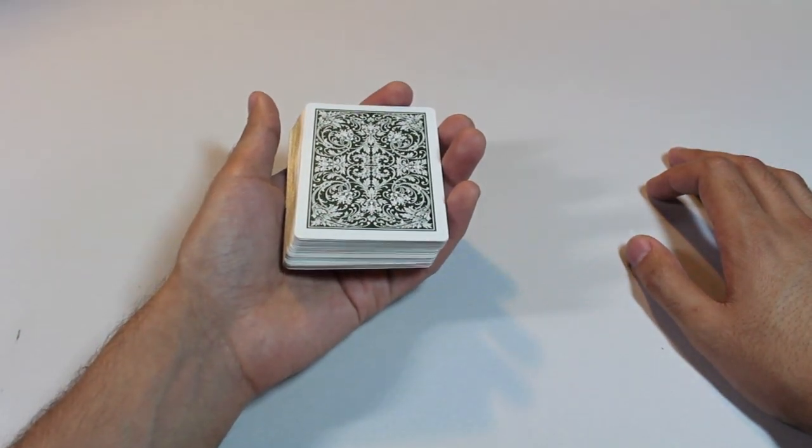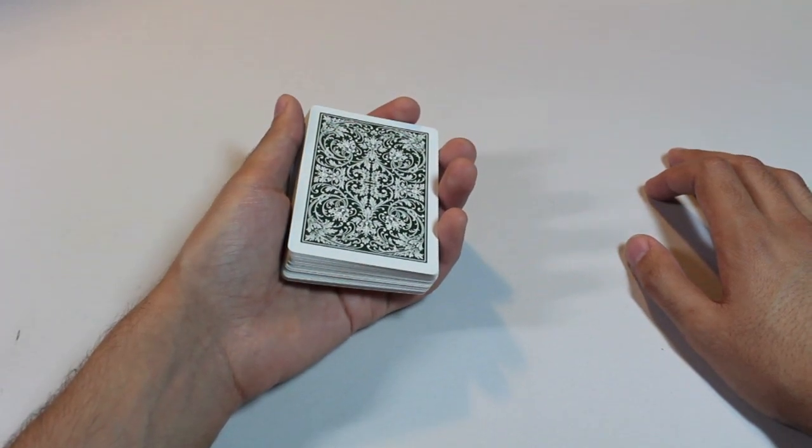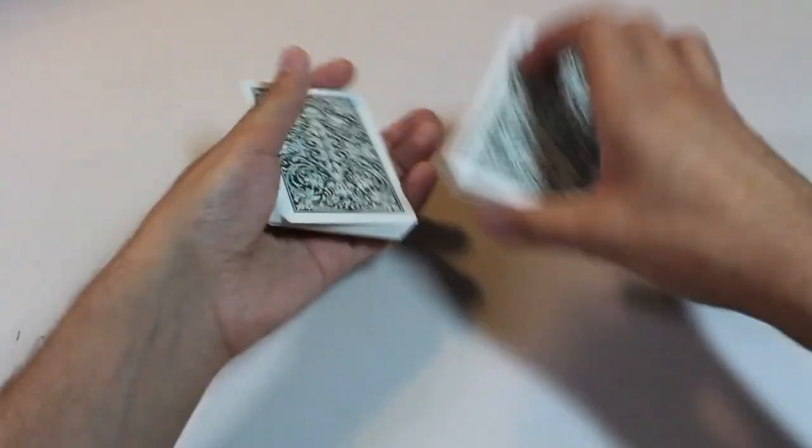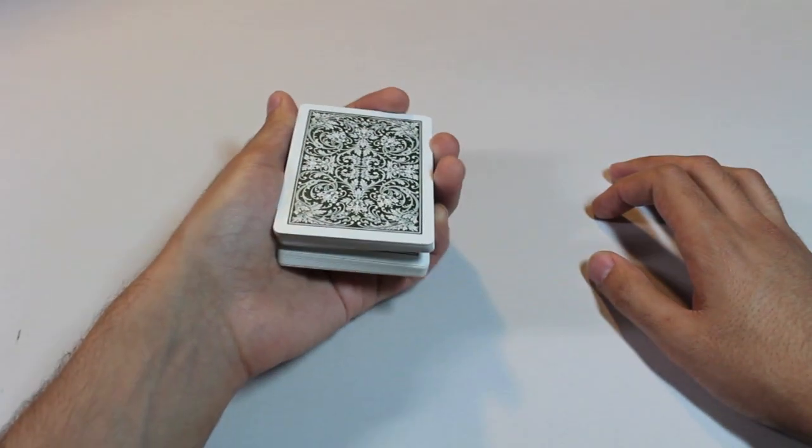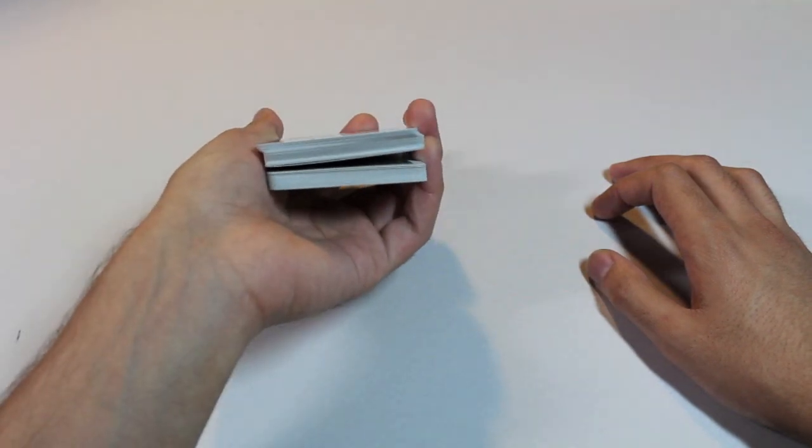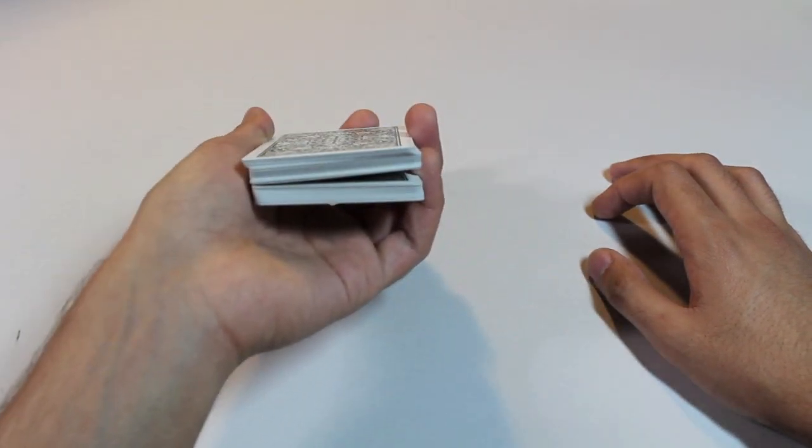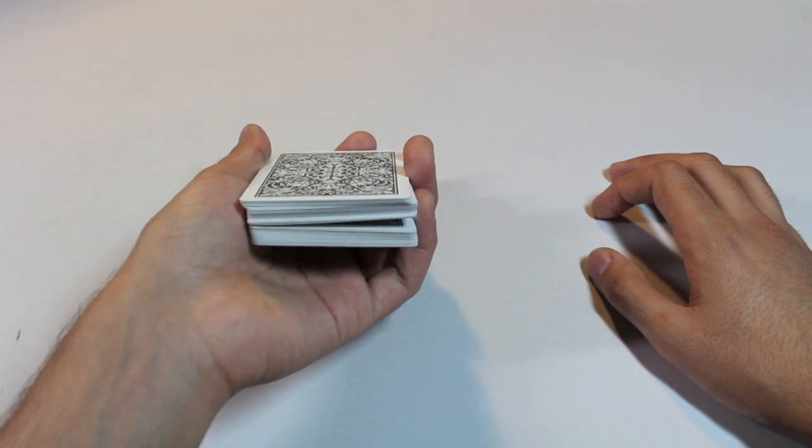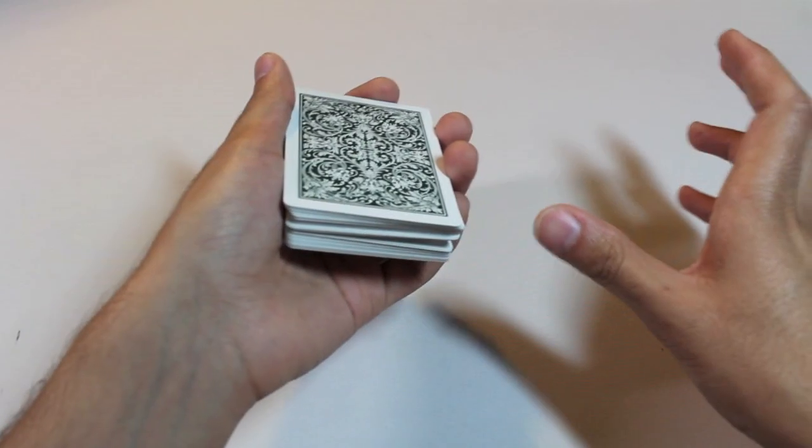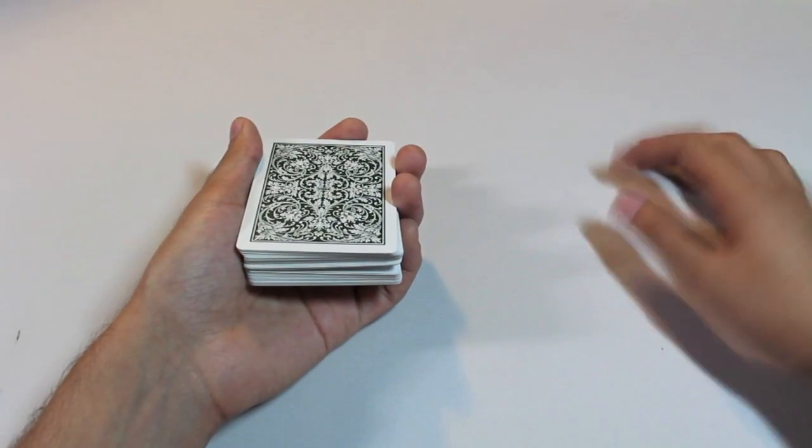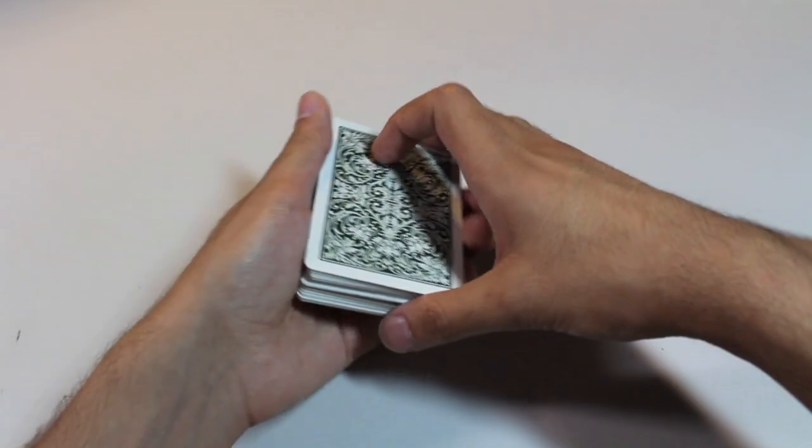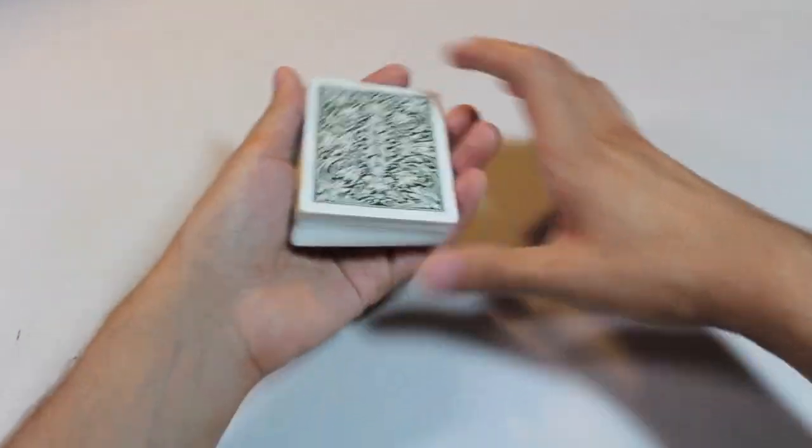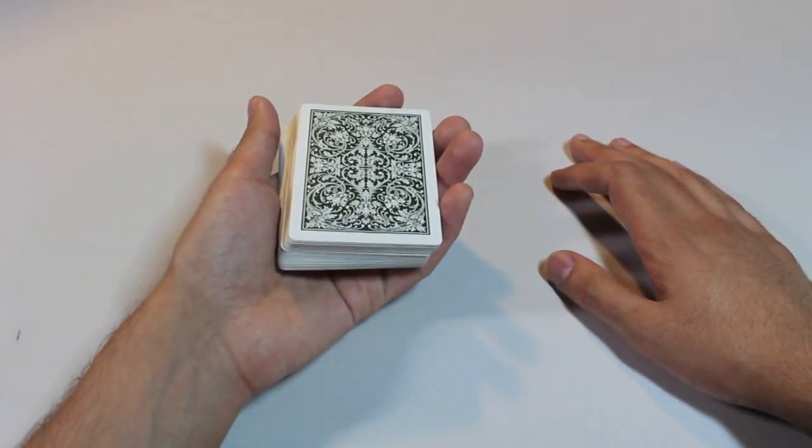In order to do the cut there's two prerequisites. You need to know how to do a swing cut and you need to know how to hold a pinky break. I've made tutorials on both of these moves in the past. So if you don't know how to do them yet I'll put links on the screen up here and in the description box down below so that you can learn them. Once you know how to do those moves you will be ready to tackle this cut.